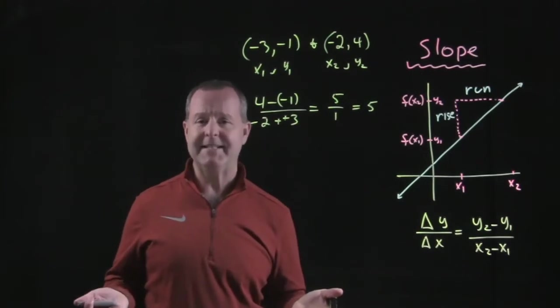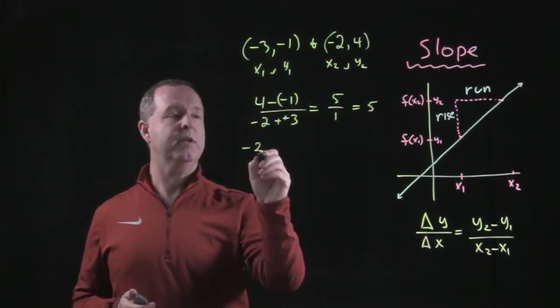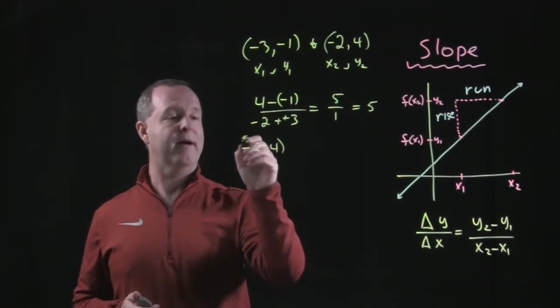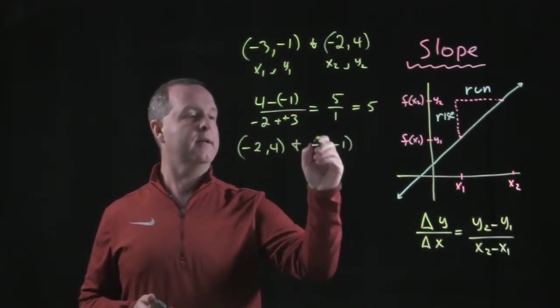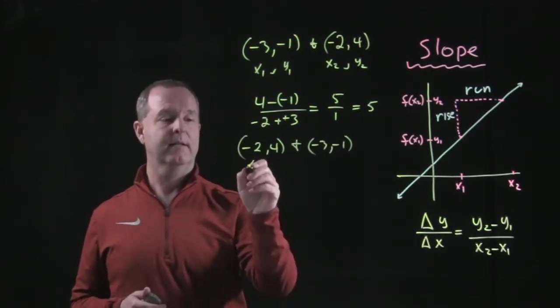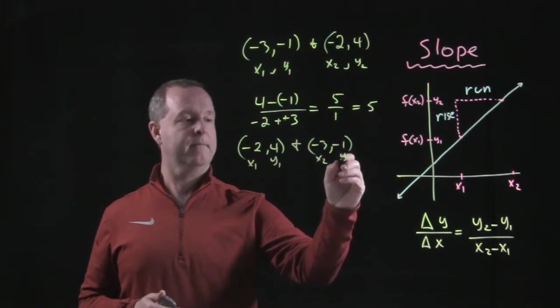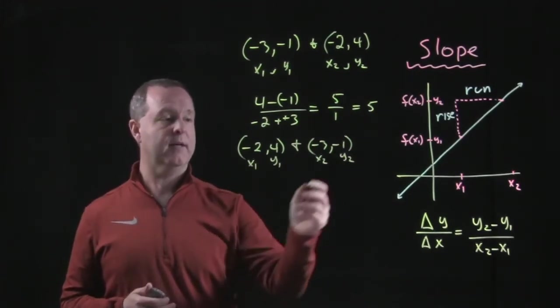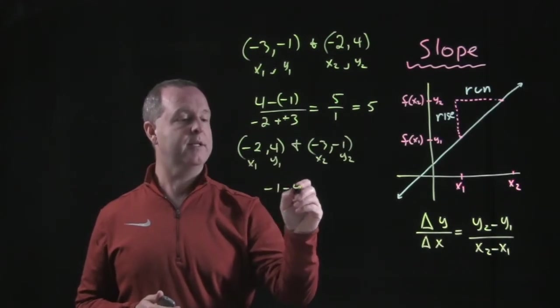Now, what if I did describe it in a different way? What if I did use negative 2 and 4 as my first set and negative 3 and negative 1 as my second set? So this becomes my x1, y1. In this particular case, y2 minus y1, negative 1 minus a 4, all over negative 3 minus a minus 2.